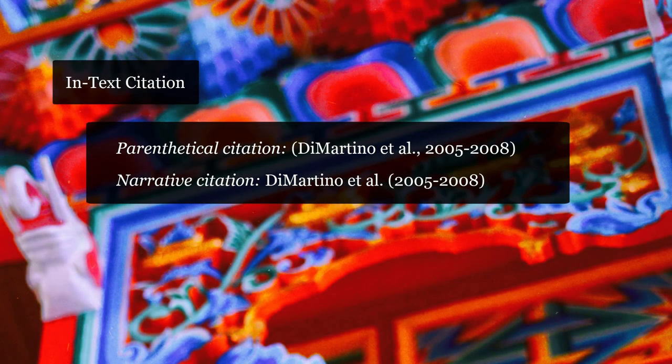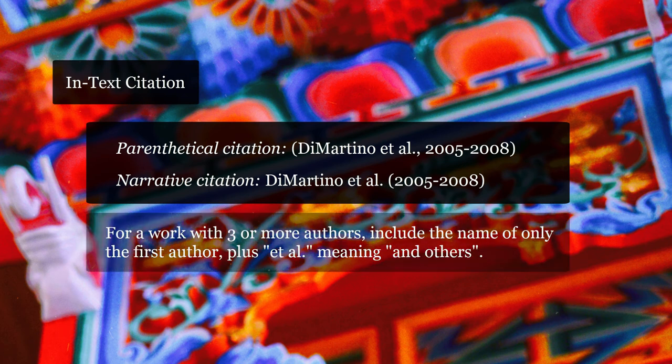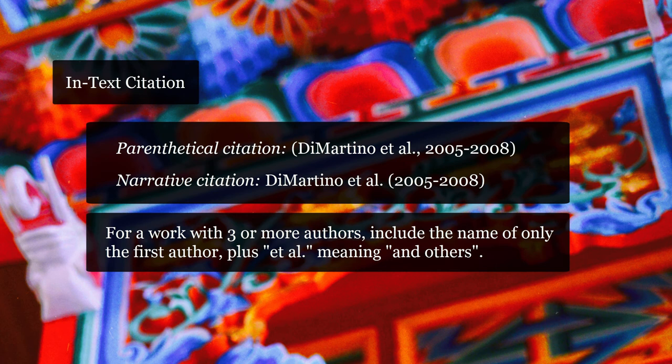In-text citation: Here is how it would look as an in-text citation. Use the names of the authors and the years of airing. For a work with three or more authors, include the name of only the first author, plus et al, meaning and others.